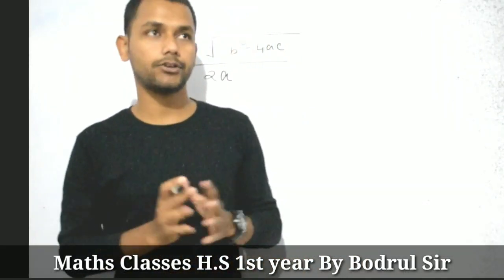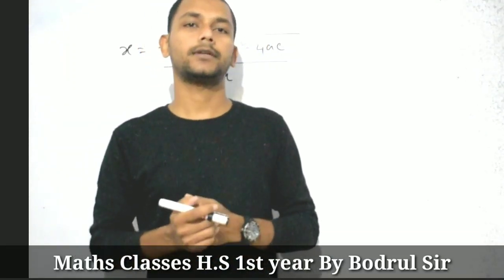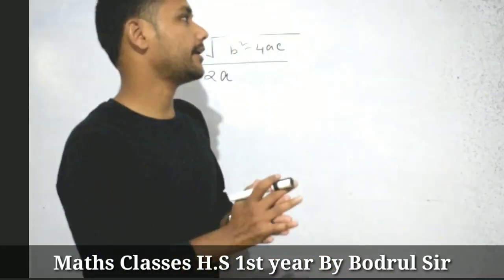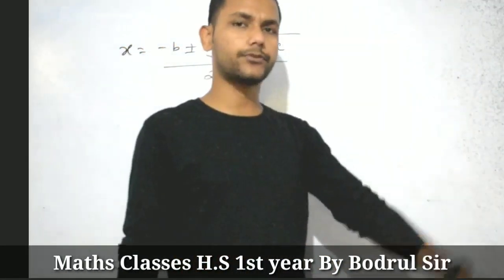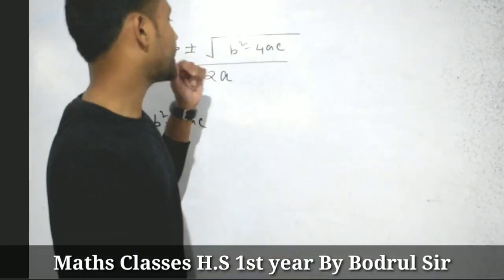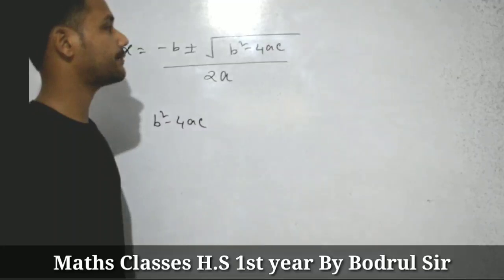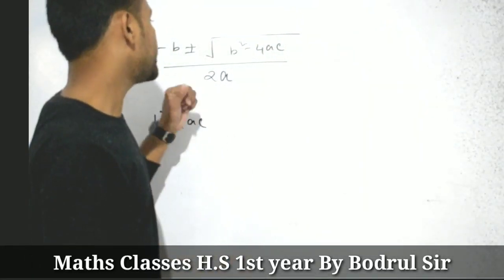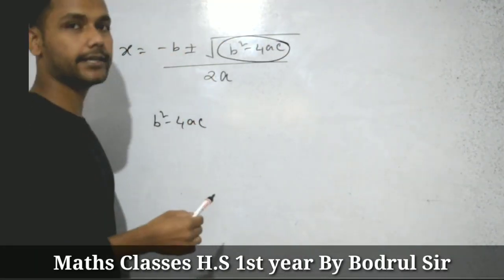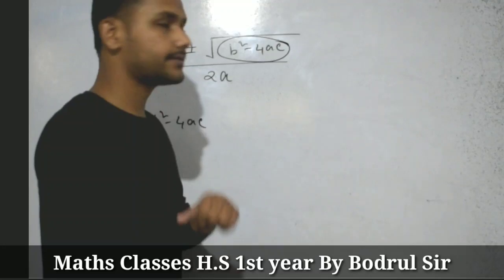Before complex number, I am going to discuss what we know from class 10, which is the quadratic equation. In the form of the formula, we have various forms. The quadratic formula is: minus b, plus minus root of b squared minus 4ac, divided by 2a. For this formula, we have a quantity, that is b squared minus 4ac.